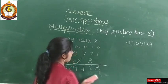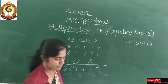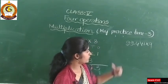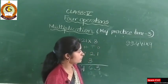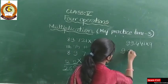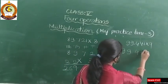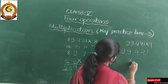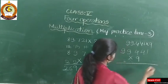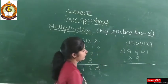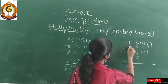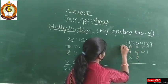I took this example from My Practice Time 3, page number 97. Here one more example: 99,441 into 9. Again, write the place values: 1s, 10s, 100s, 1000s, 10,000.